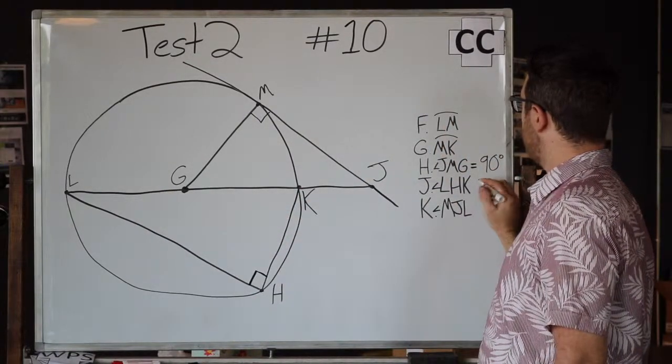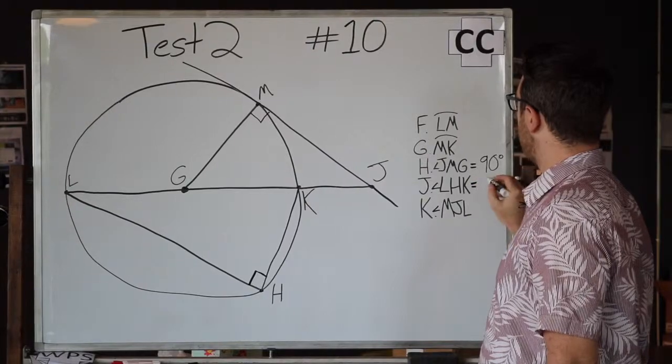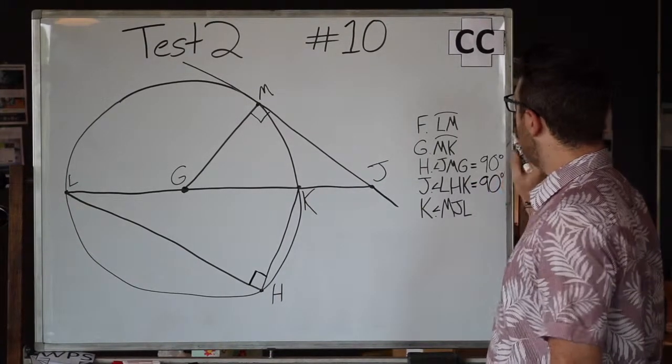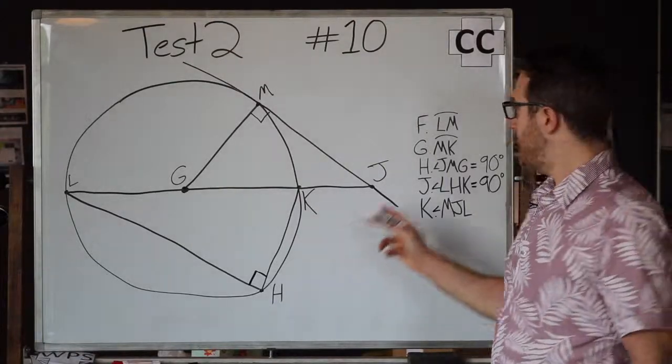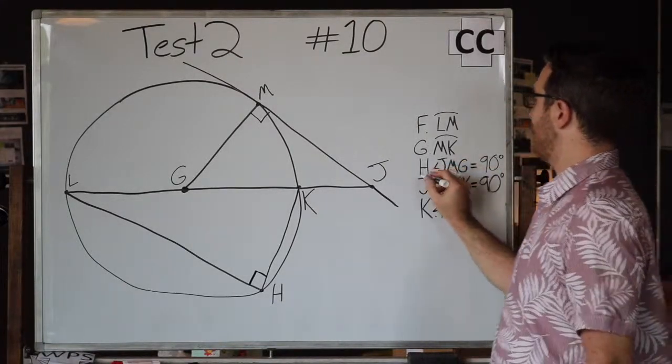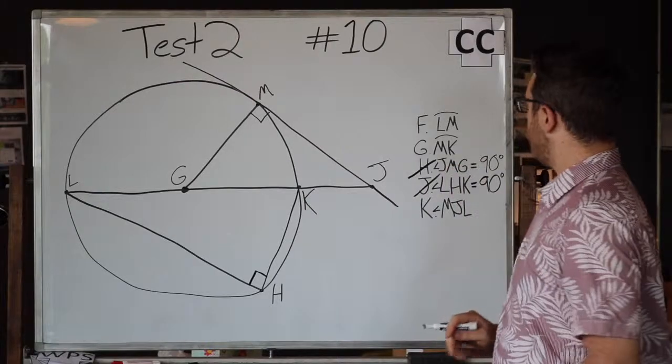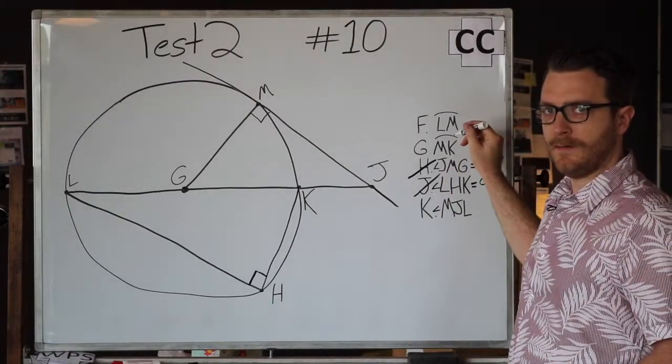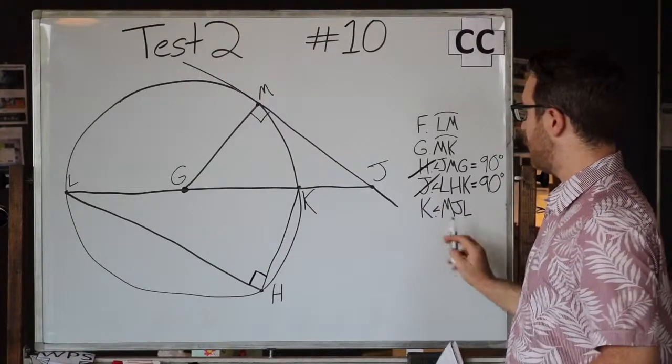So the angle LHK also equals 90 degrees. So obviously we want to know which one of these angles or arcs is the largest. These two cannot be the correct answer because they are equal.